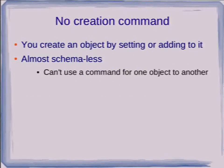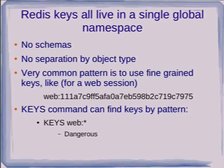There is no creation command for a Redis object — it springs into existence when you add some value to it. So it's almost schemeless. The only thing is that if you try to use a list operation on a set or something like that, it objects. But apart from that Redis is pretty much totally schemeless. And we have a single global namespace for all objects of all types, so you can't have two objects of different type with the same name — every object must have a unique name. People tend to build unique names along particular naming patterns.